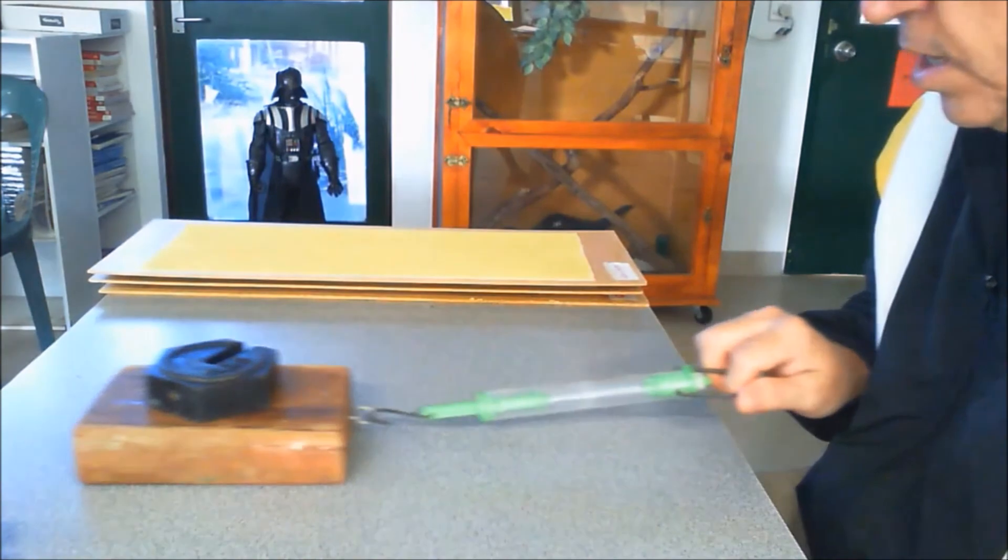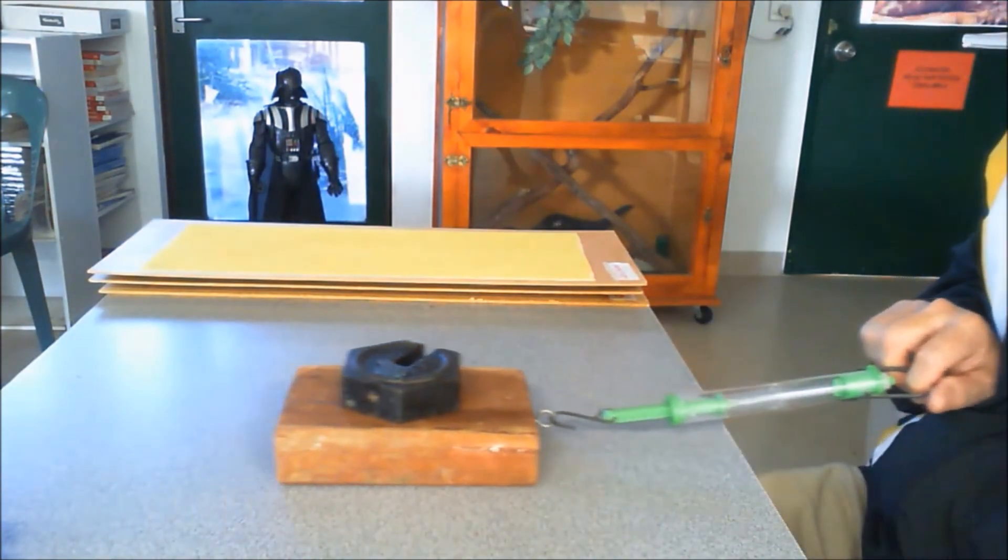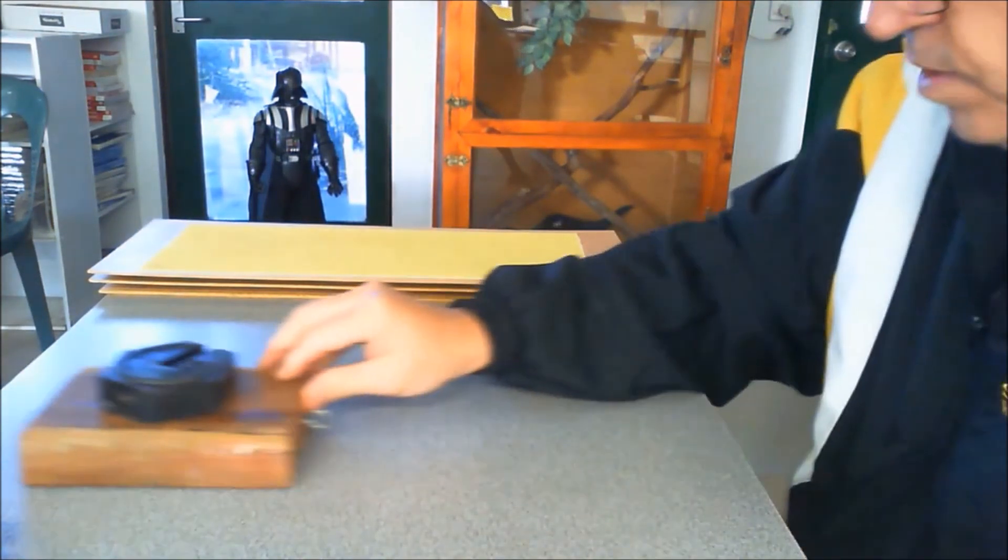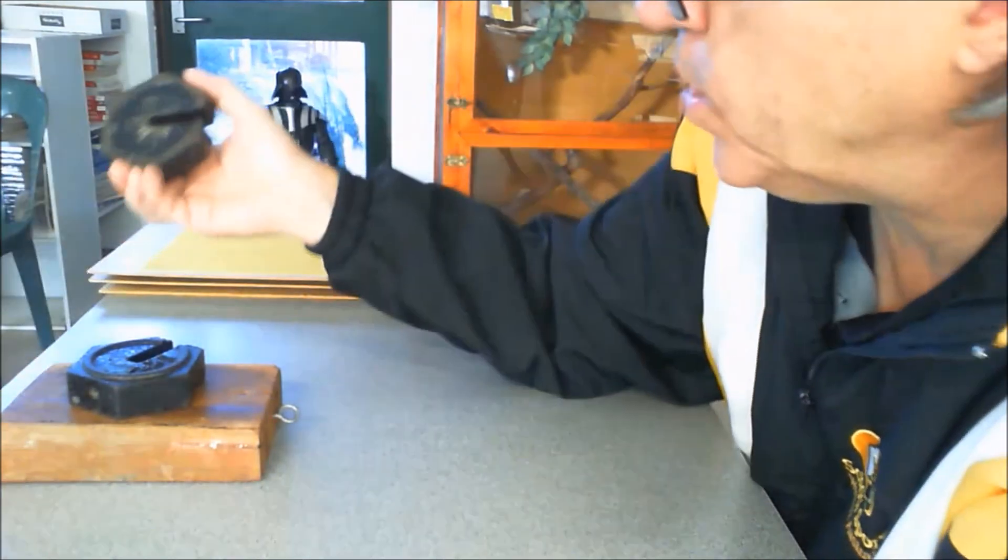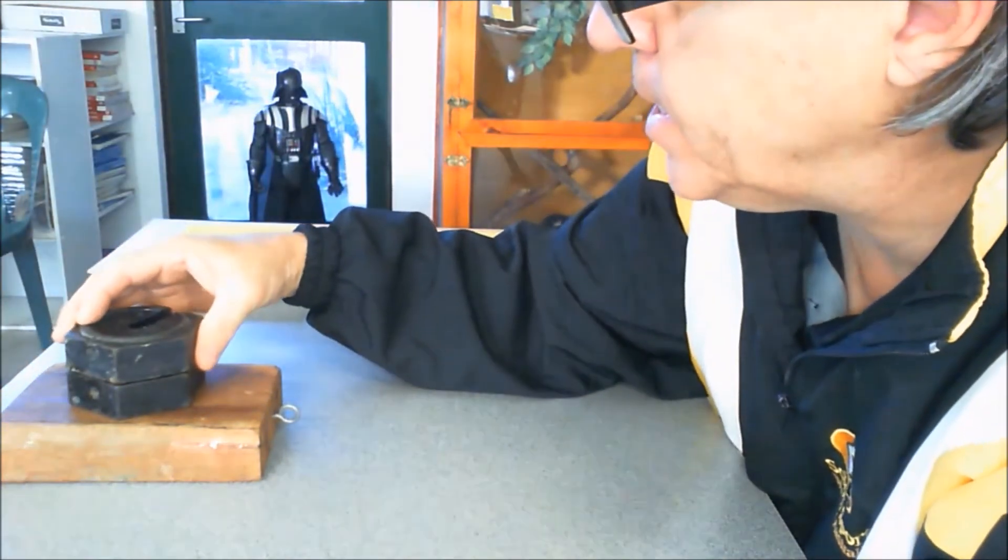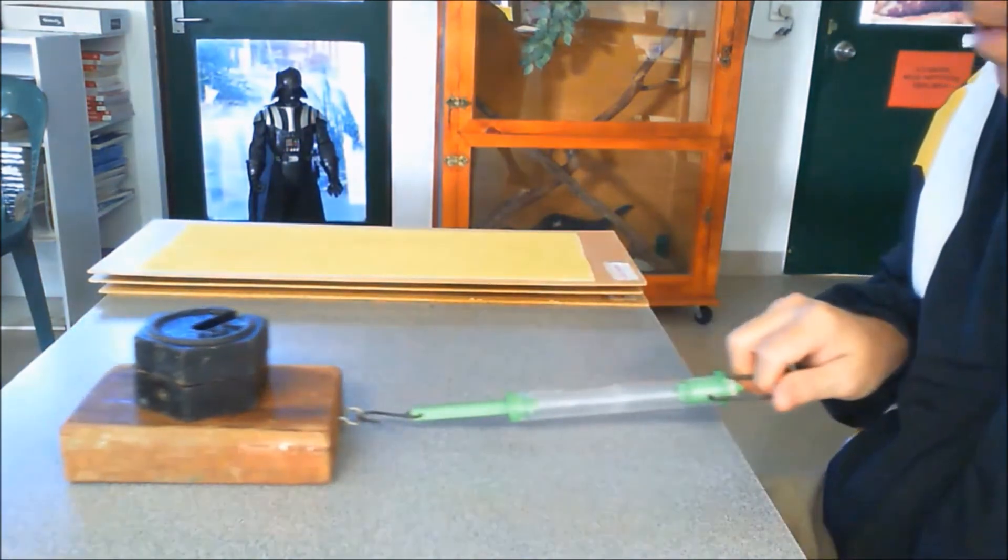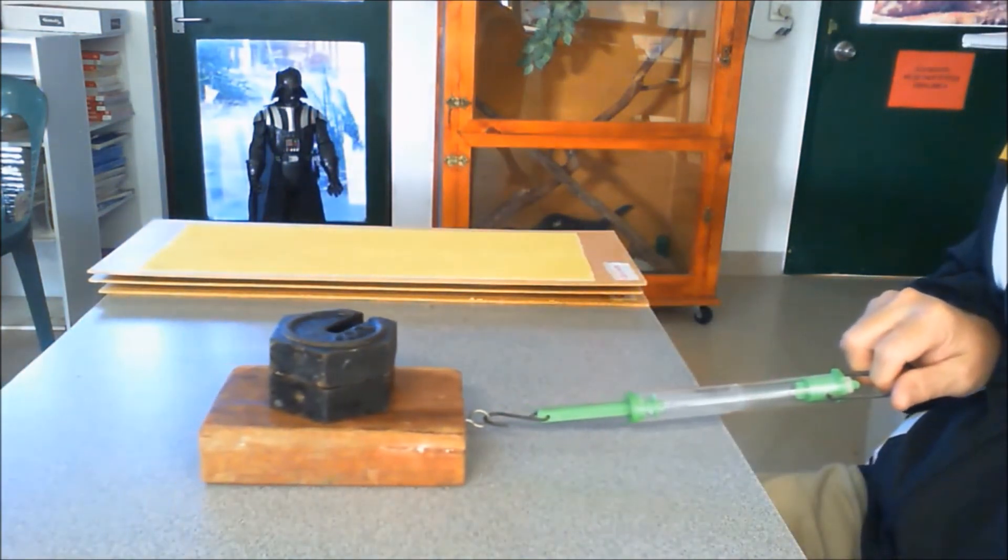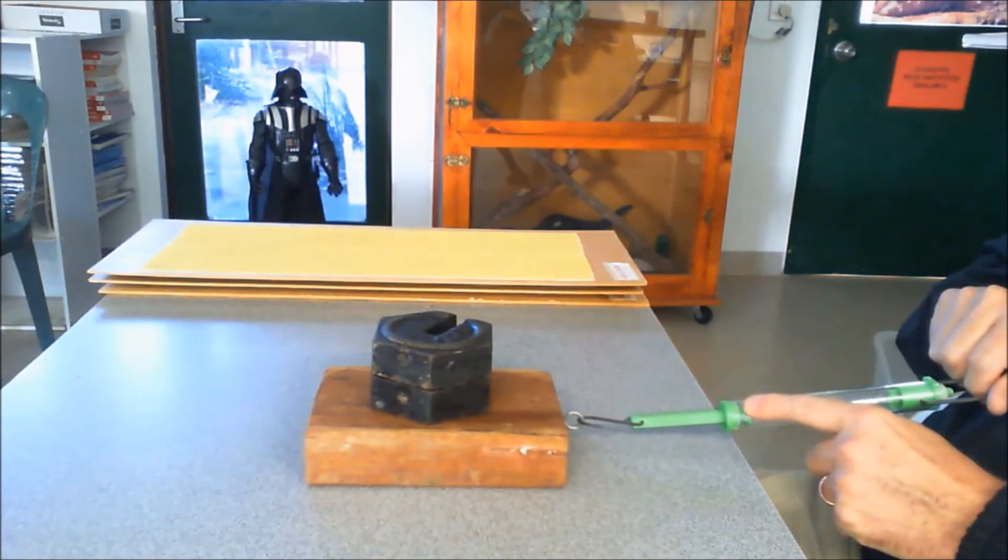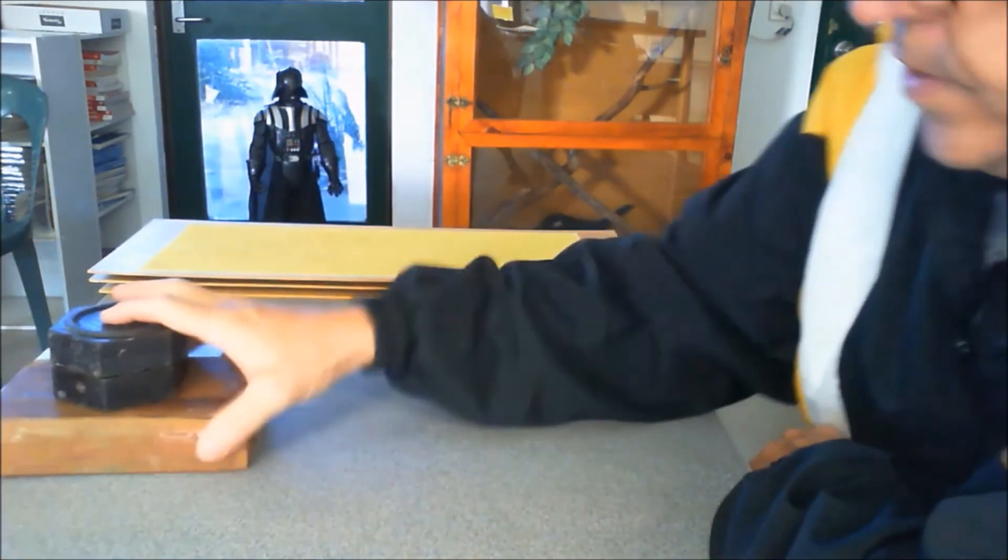So what we're then going to do is we're going to increase it up a little bit, so we're going to put a weight on and we get down to about 3.5 with that one, with one kilogram on.